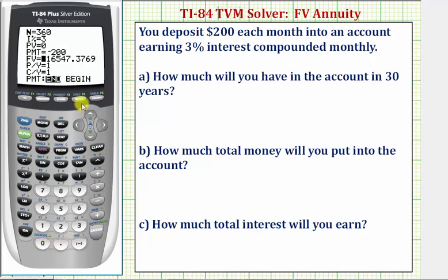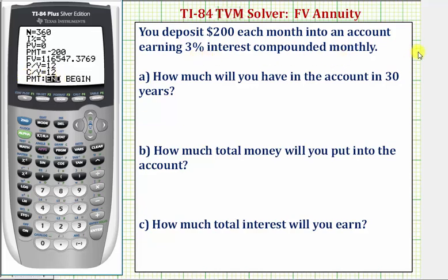We're solving for the future value, so we'll skip past it and press Enter. Payments per year — we're making monthly payments, so there are 12 payments per year. We enter 12 and press Enter. This automatically changes the compounds per year to 12, which in this case is correct because the interest is compounded monthly.